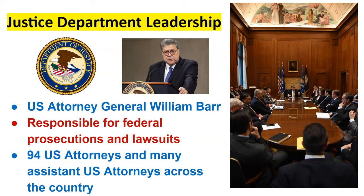Let's talk about the Justice Department — it's overseen by an attorney general, not a secretary. The attorney general right now is William Barr, and until January 20th, he is responsible for overseeing what the government does, both in prosecuting cases and defending lawsuits against the United States. He is the lead attorney for the United States. He also has a deputy attorney general and a solicitor general. There are 94 U.S. attorneys in those 94 districts across the country. They work for the Justice Department and will represent the U.S. government in those districts when a federal case comes up.